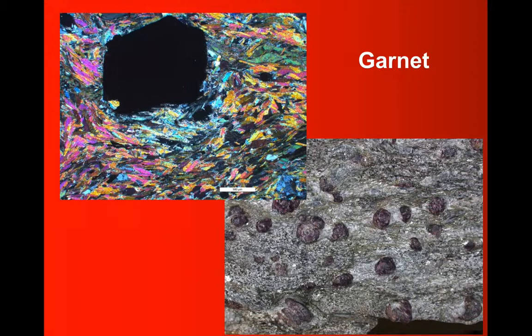But in thin section it's very distinctive indeed. It's black, it doesn't allow light through it, and you can often see as in this example the nice euhedral straight edge crystal shape creating a hexagonal shape in cross section. It's very distinctive stuff and absolutely characteristic of metamorphic rocks.